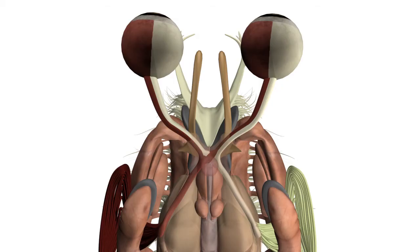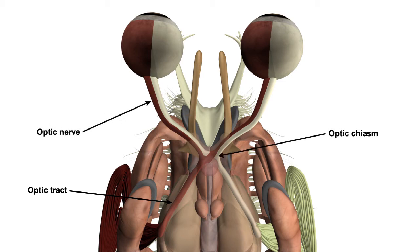The lateral geniculate nucleus receives input from the retina from the contralateral visual field via the optic tract. Efferent fibres from the temporal and nasal halves of each retina project along the optic nerve to the optic chiasma, where fibres from the nasal retina decussate and pass to the contralateral side, while fibres from the temporal retina project to the ipsilateral side.